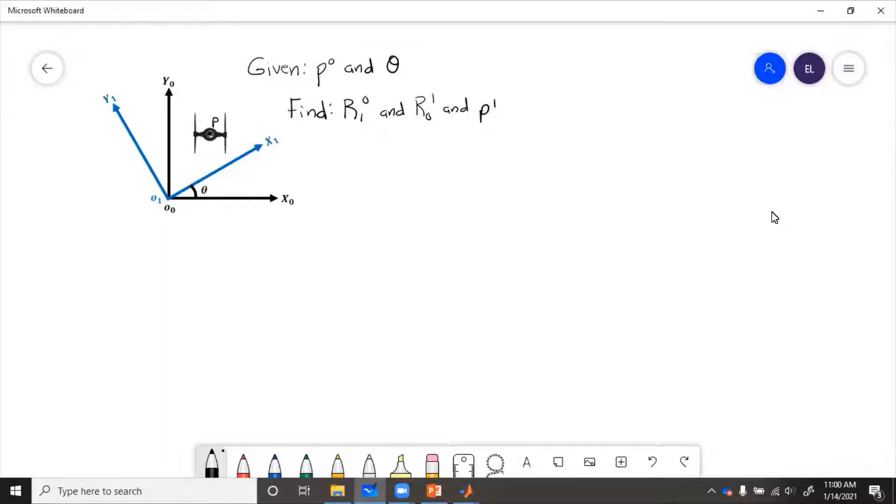So first thing we're going to find, rotation of frame one with respect to frame zero. So to do that, we know R10 equals cosine theta, sine theta, minus sine theta, cosine theta, zero, zero, zero, zero, one. This is our standard formula.